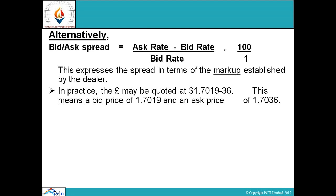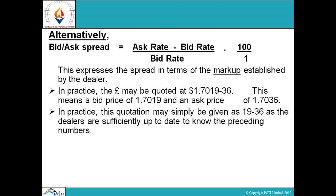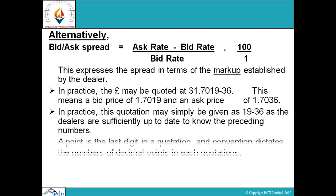In practice, the pound may be quoted at dollar 1.7019/36. This means a bid price of 1.7019 and an ask price of 1.7036. In practice, this quotation may simply be given as 19/36, as dealers are sufficiently up to date to know the preceding numbers. A point is the last digit in a quotation, and convention dictates the number of decimal points in each quotation.